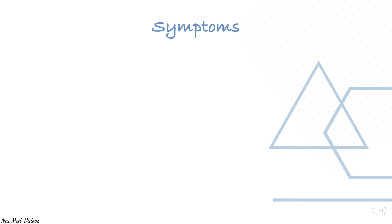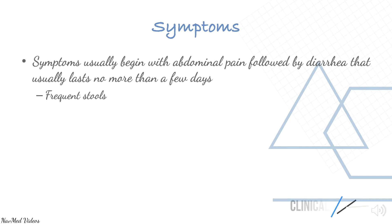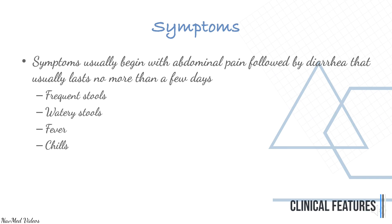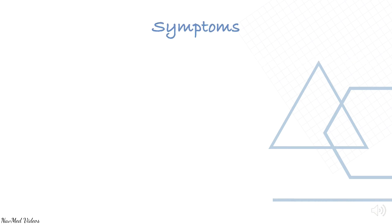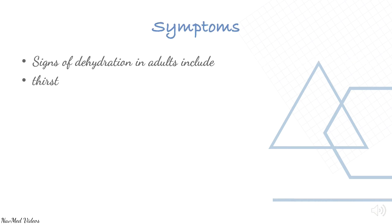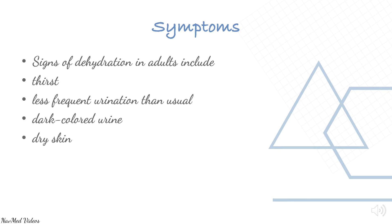Symptoms usually begin with abdominal pain followed by diarrhea that lasts no more than a few days. Other symptoms include frequent stools, watery stools, fever, chills, anorexia, vomiting, and malaise. Signs of dehydration in adults include thirst, decreased urination, dark-colored urine, dry skin, and fatigue.